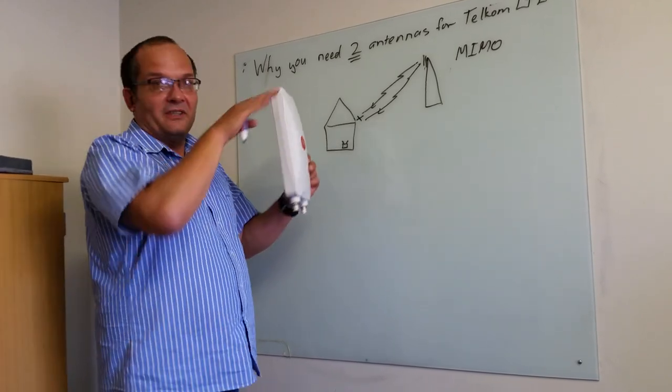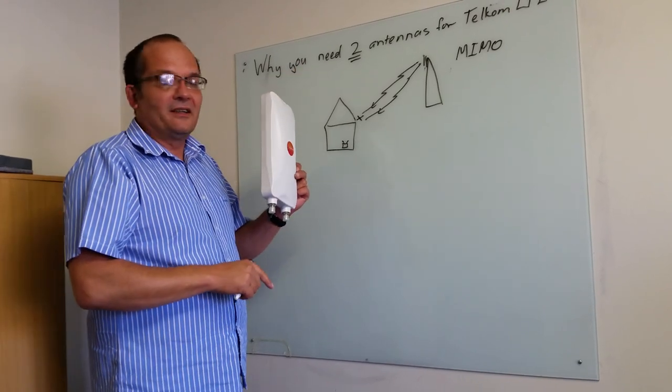That's a little clumsy because then you sit with two antennas outside your house, two cables running down and so forth.